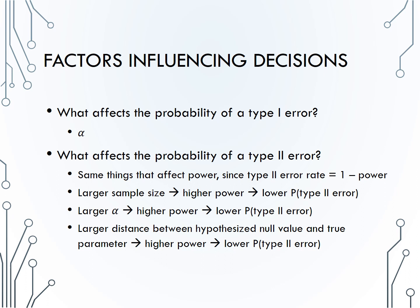Lastly, we looked at what influences the probability of these errors. Clearly, since the probability of a type 1 error is our significance level, alpha will be the only influence on the probability of a type 1 error. However, type 2 error is tied to power, so all of those things that affect power will also affect the probability of a type 2 error. A larger sample size gives us more power, which will give us a lower probability of a type 2 error. A larger significance level gives us more power and will lead to a lower type 2 error rate. And a larger distance between the hypothesized null value and the true or expected parameter will give us more power, again leading to a lower probability of a type 2 error.